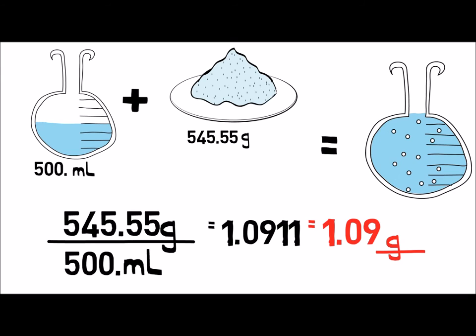When multiplying or dividing significant figures, the calculated number has the same number of significant figures as the least precise number used in the calculation.